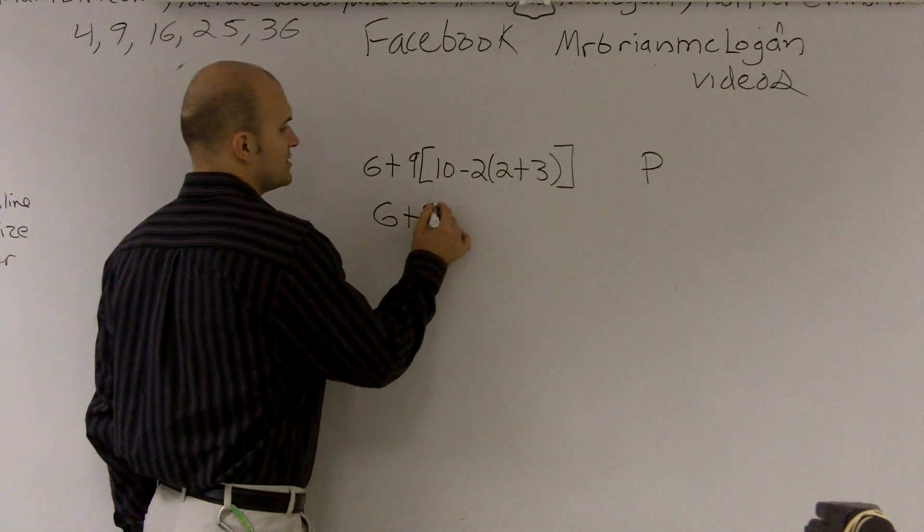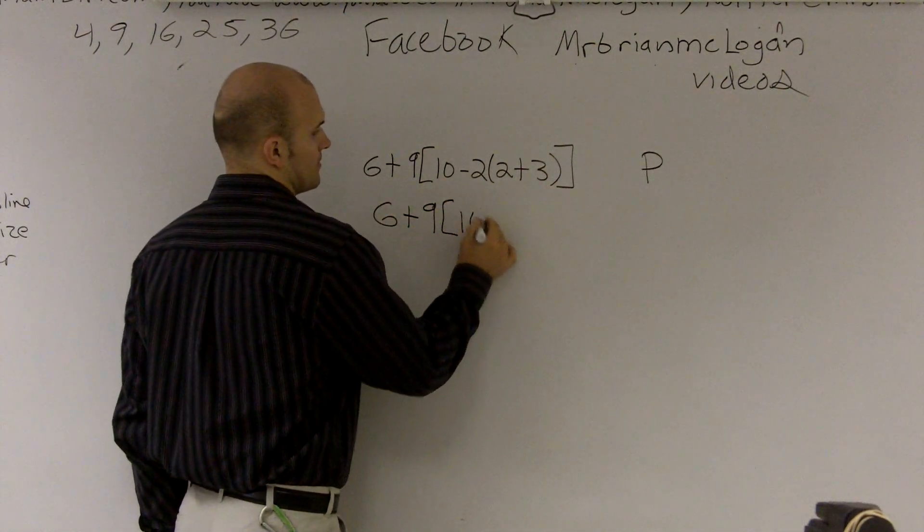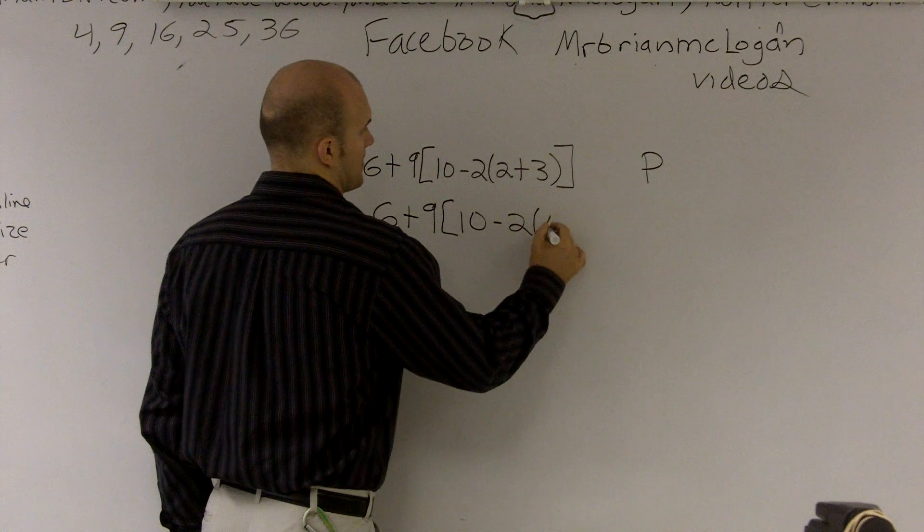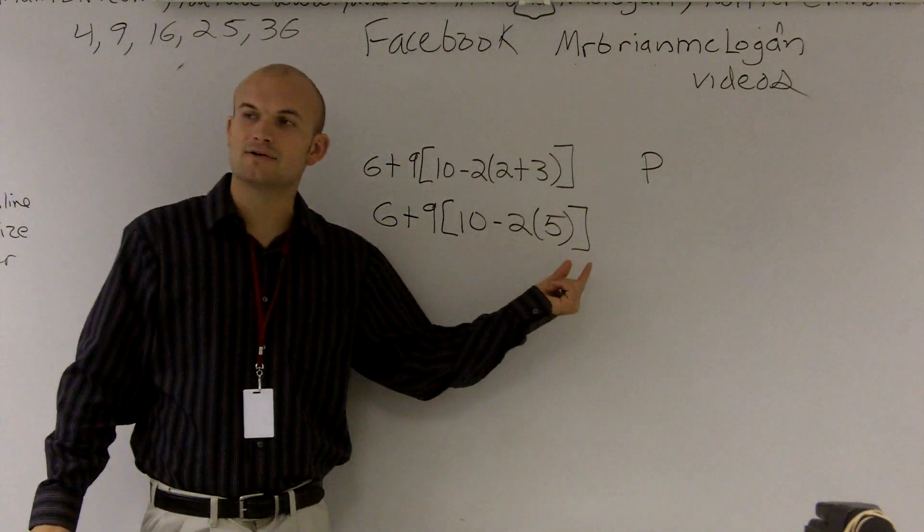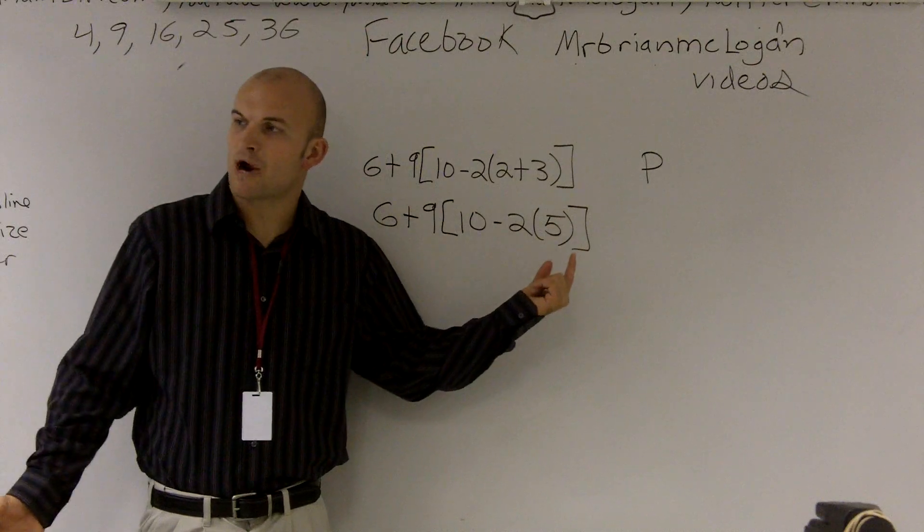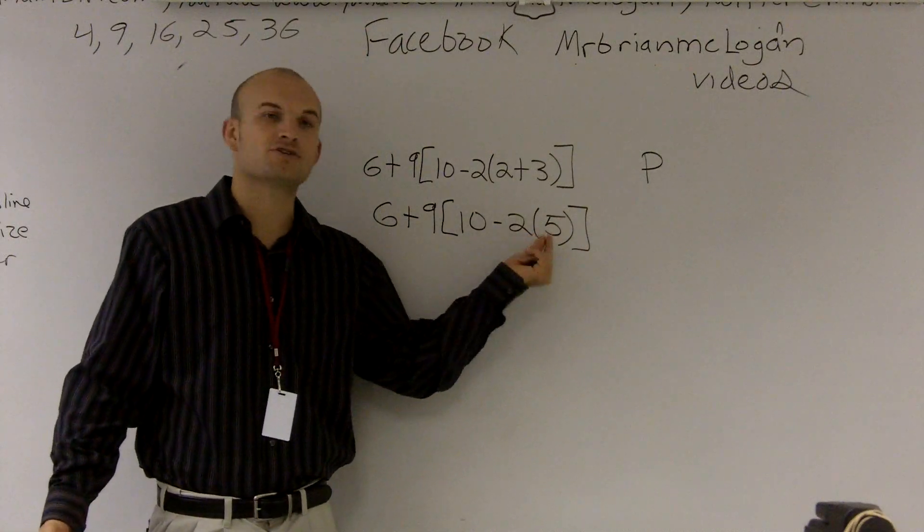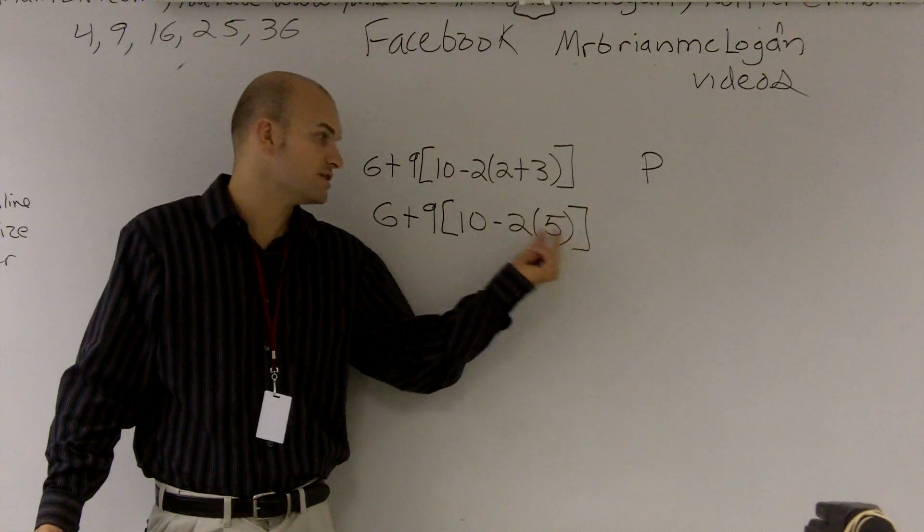So let's rewrite my equation. Now, I don't really need to put parentheses around my 5 anymore because there's no more operations. But I keep the parentheses around there to remind me that this is going to be a multiplication of 2 times 5.